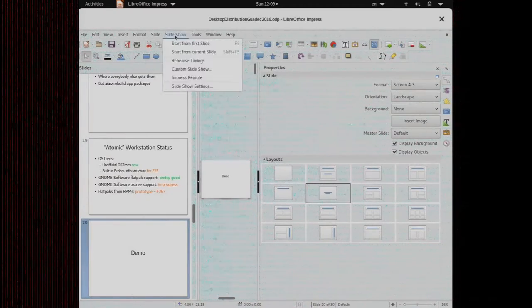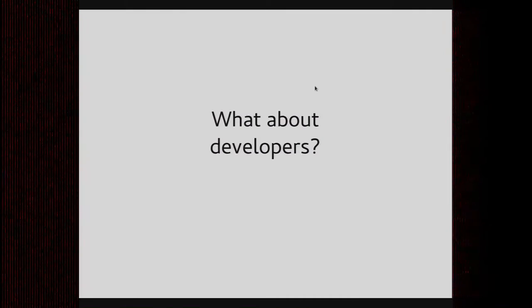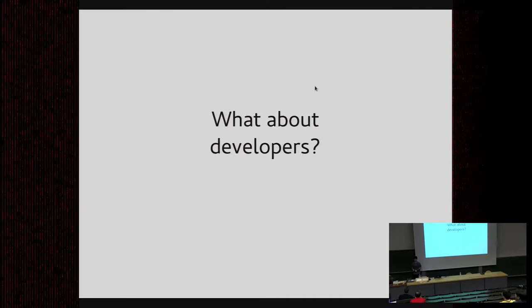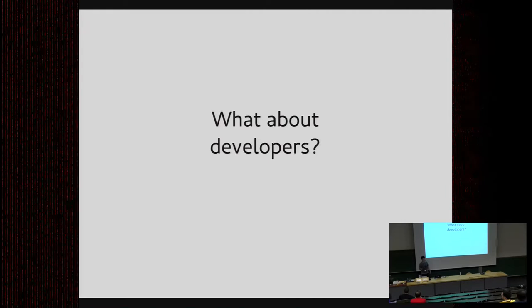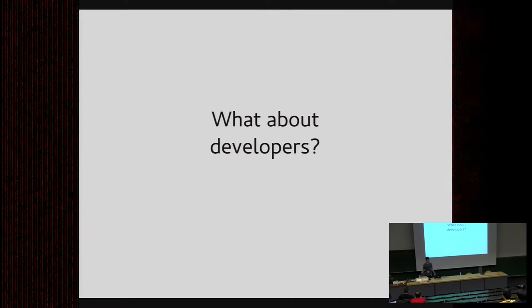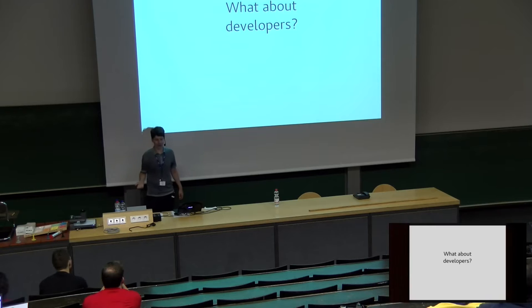But what about developers? I only have about four packages layered. If you start with JHBuild or do any development on Fedora, you're going to install hundreds of packages — all these development headers, GCC, automake, gnome-common. If you had all those layered on top, that completely spoils the point of having an immutable OS tree. You might as well just forget the whole project.